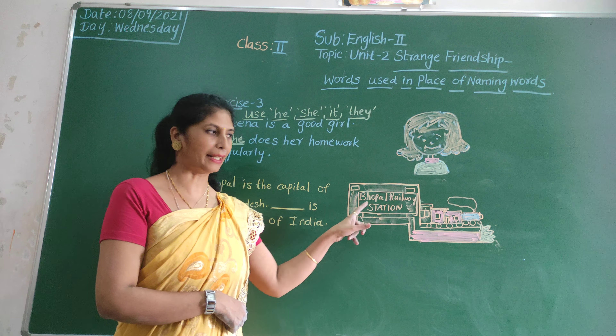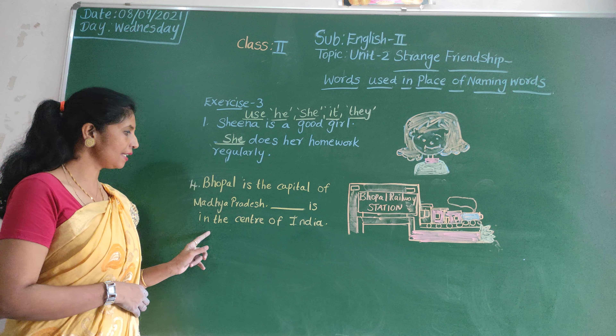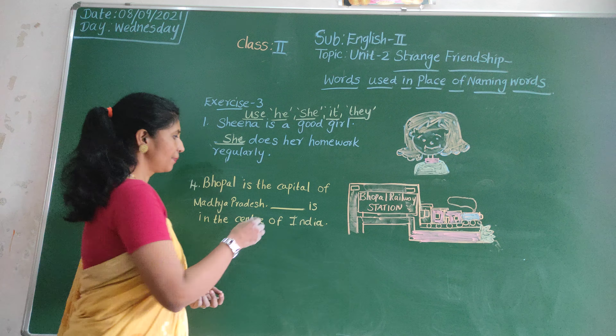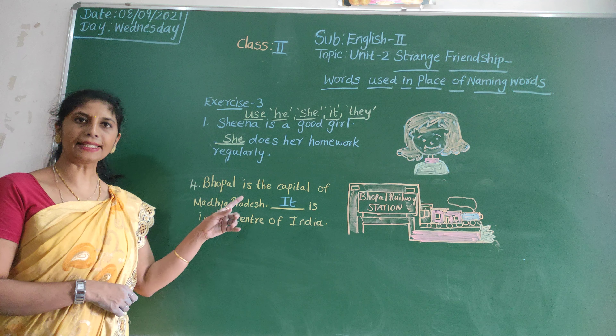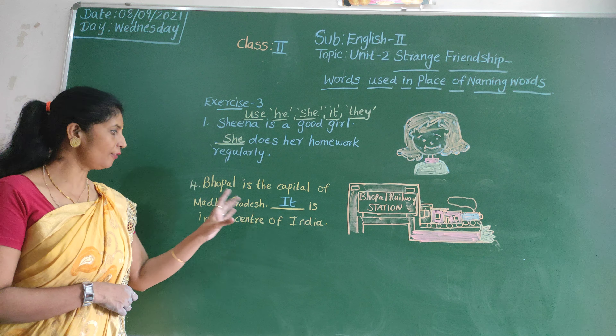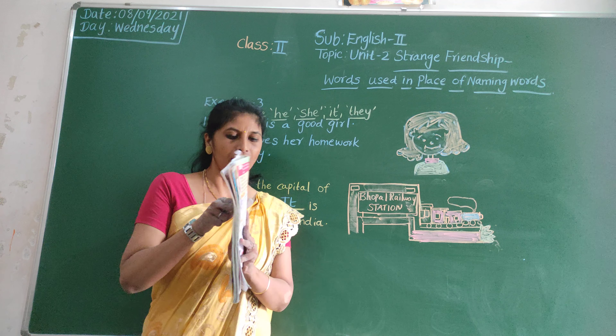Next, number four. Look at the picture — Bhopal railway station. Bhopal is the capital of Madhya Pradesh. Dash is in the centre of India. It is in the centre of India. See, look at the picture — Bhopal railway station. Nice, no?